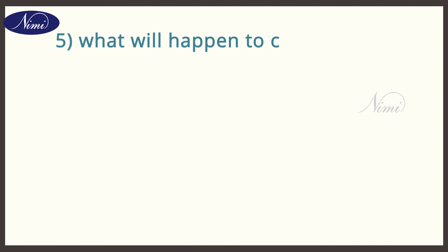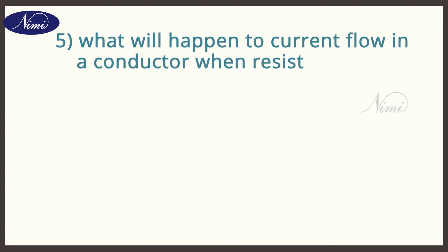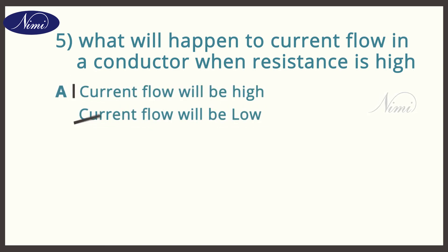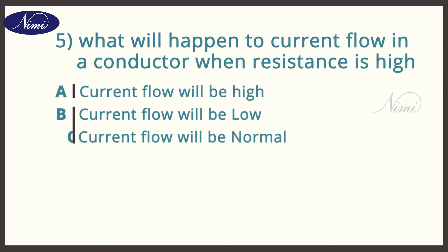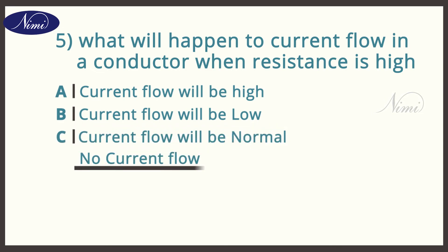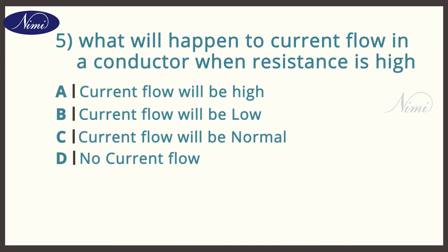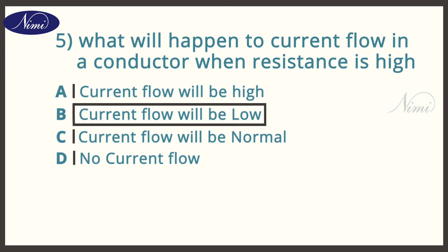Question number five: What will happen to current flow in a conductor when resistance is high? Options are A: Current flow will be high. B: Current flow will be low. C: Current flow will be normal. D: No current flow. And the answer is B — Current flow will be low.